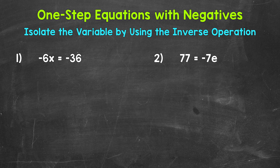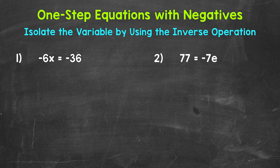When we solve one-step equations with negatives, we solve them the same way we solve one-step equations that have only positives. We want to isolate the variable, which means get it by itself. We do this by using the inverse operation, which means the opposite operation. Basically, we want to undo whatever is being done to the variable, so the variable is by itself on one side of the equation. Whatever is done to one side of the equation, it must be done to the other in order to keep everything balanced and equal.